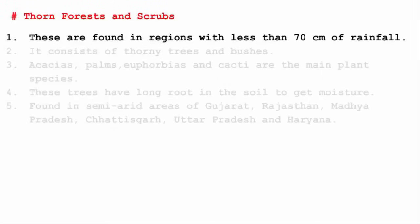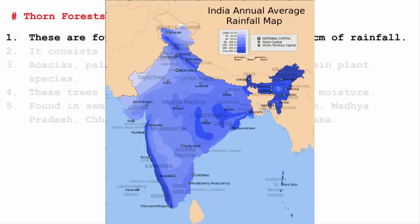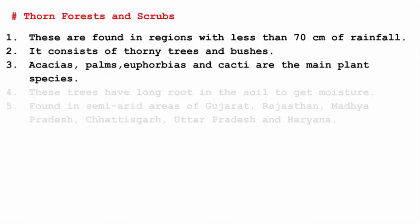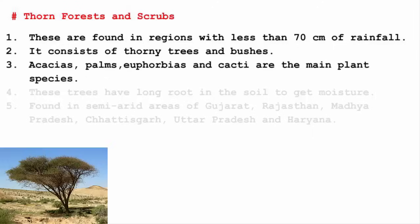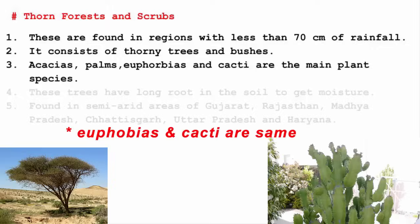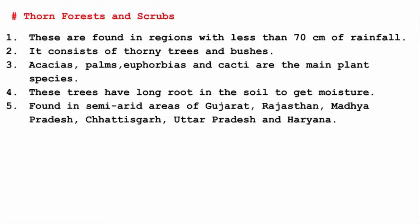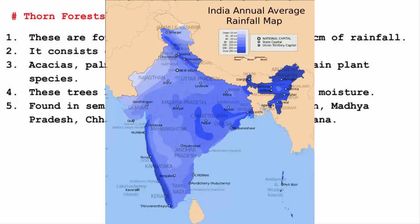Thorn forests and scrubs are found in regions with less than 70 cm of rainfall. By the name, you can figure out they consist of thorny trees and bushes. Main plant species include acacias, palms, euphorbias, and cacti. These trees also have long roots to get maximum moisture from the soil. They are usually found in semi-arid areas of Gujarat, Rajasthan, Madhya Pradesh, Chhattisgarh, Uttar Pradesh, and Haryana.